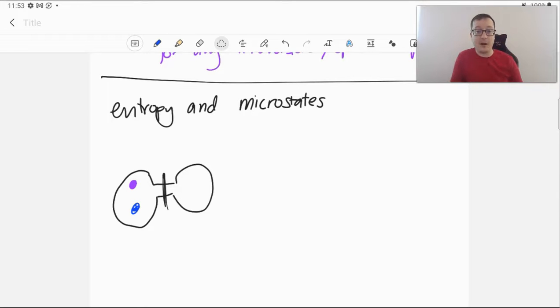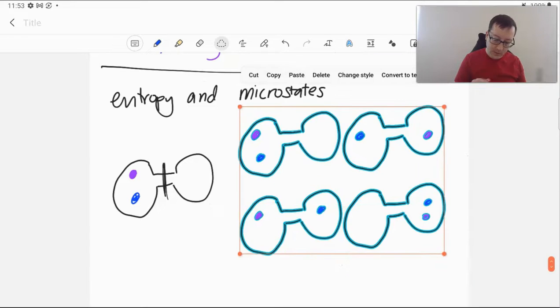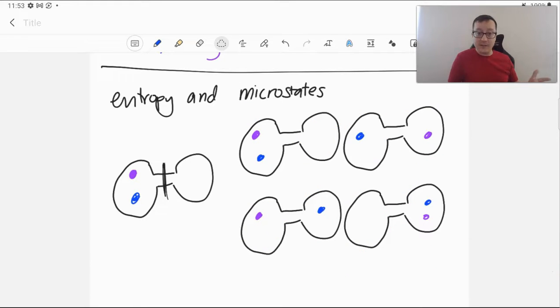Once we open that stopcock, if we were to just take a snapshot at various stages in time, we have four options that come up. We'll see that we have the option of them both being on the left side. We could have the blue one on the left, the purple on the right. We could have the opposite, purple on the left, blue on the right, or both of them on the right.